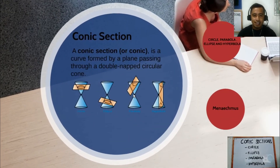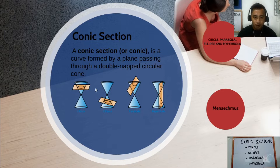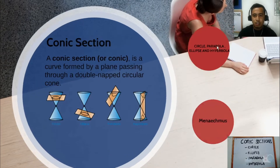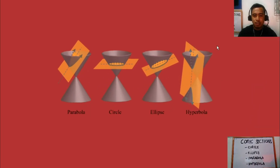A conic section, or a conic, is a curve formed by a plane passing through a double-naped circular cone. It can form a circle, an ellipse, a parabola, or a hyperbola. To understand more, let us watch this video.